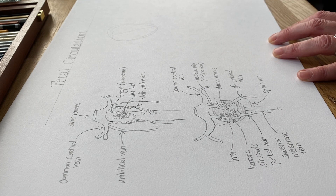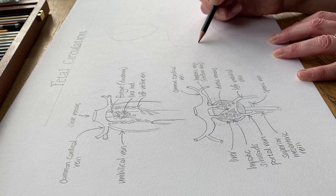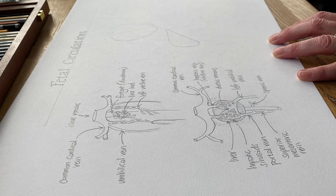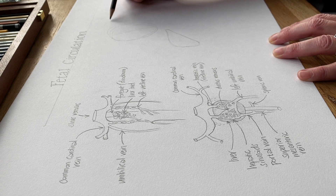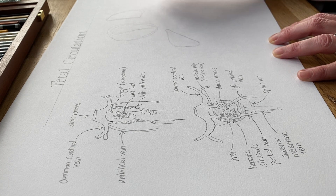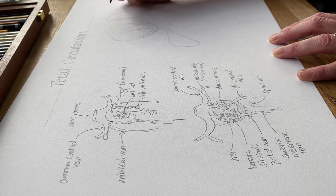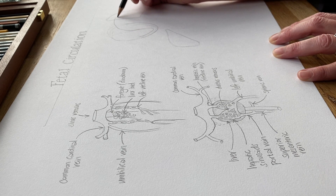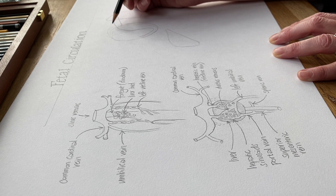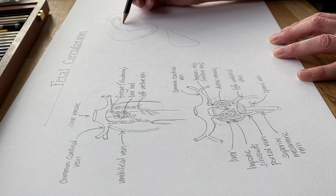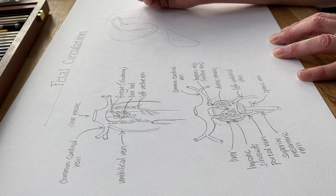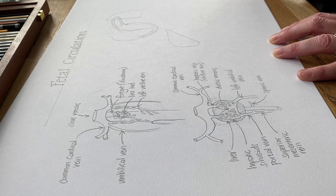I'm starting to sketch out the fetal circulation, which is quite different to our own. It really is a single circulation — a bit like the circulation of a fish, where the heart pumps deoxygenated blood to the gills, the blood picks up oxygen, then it's pumped around the body and back to the heart. The fetus effectively has a single circulation: oxygenated blood enters the heart, is pumped around the body, and then goes off to the placenta to be oxygenated again, rather than returning to the heart in between.